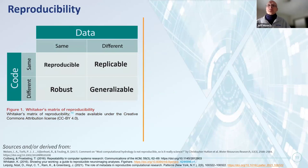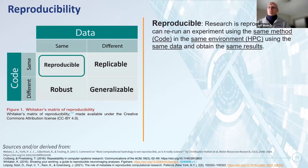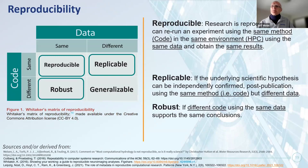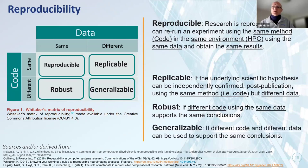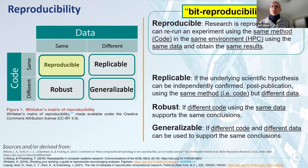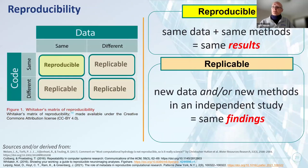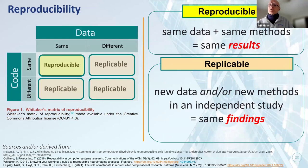Whitaker's matrix of reproducibility defines different types of reproducibility. Research is reproducible if the same data run against the same code produces the same results; replicable if different data using the same code produces the same results; robust if the same data applied to different code generates the same results; and generalizable if different data run against different code produces the same conclusions. The first is termed bit reproducibility and the rest are termed conclusion reproducibility. Simply put, research is reproducible if the same data and same methods produce the same results.